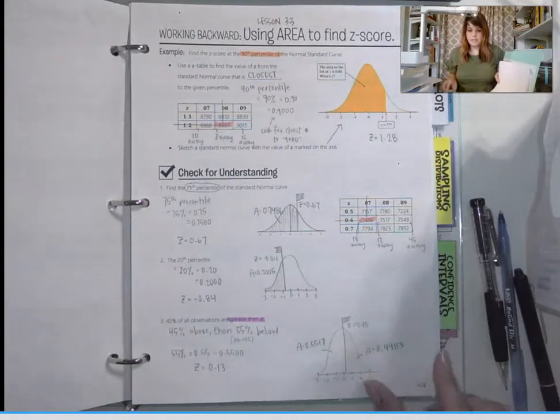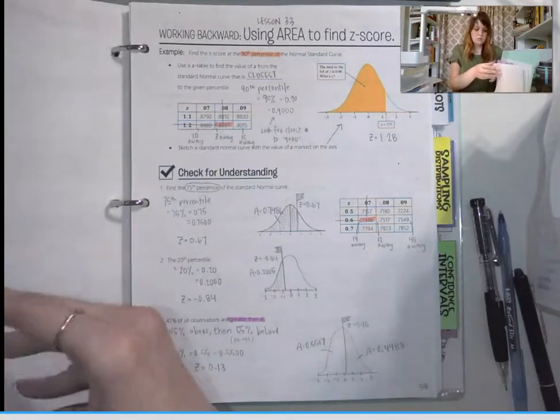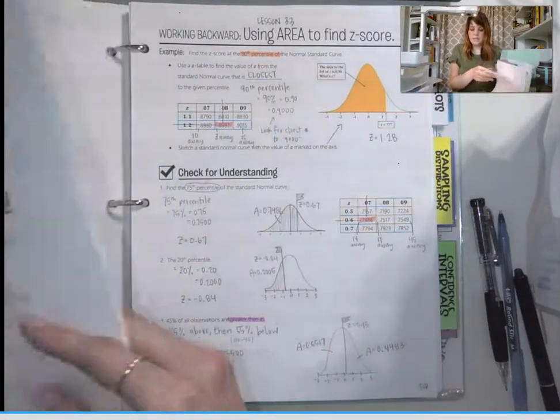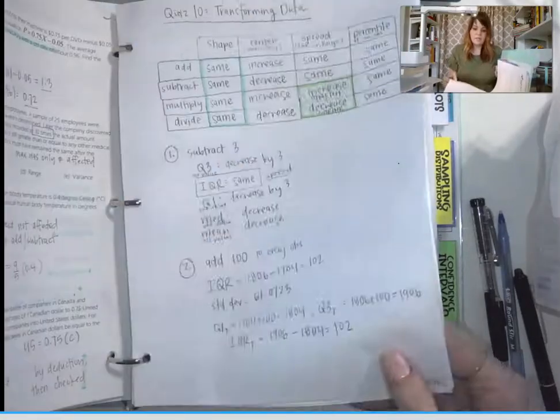Page 308 is lesson 33, and it is using area to find Z-score.